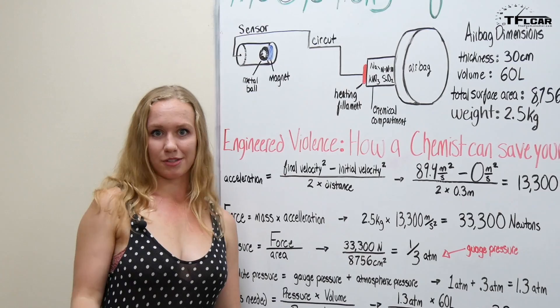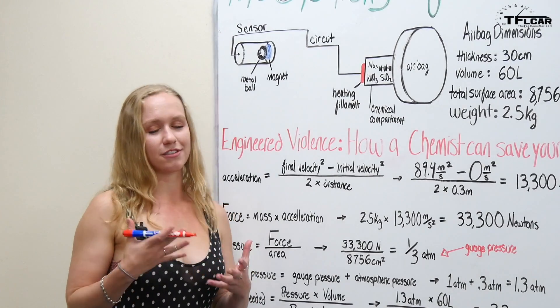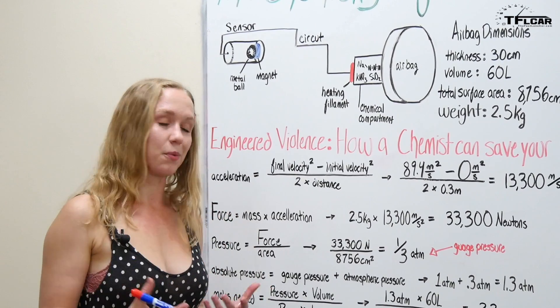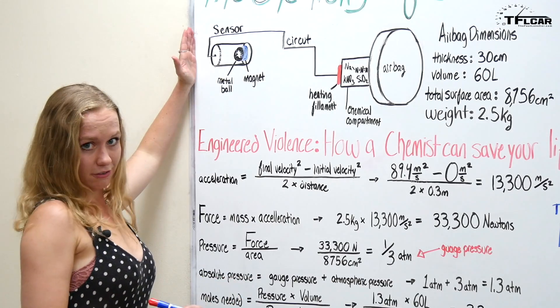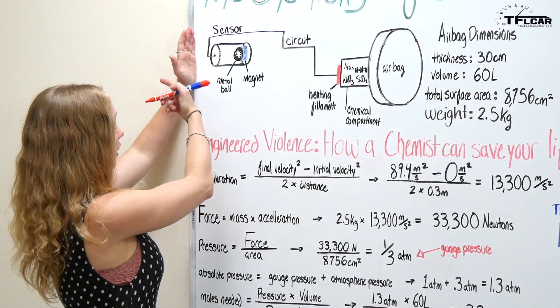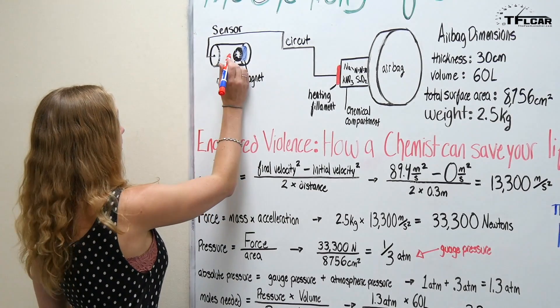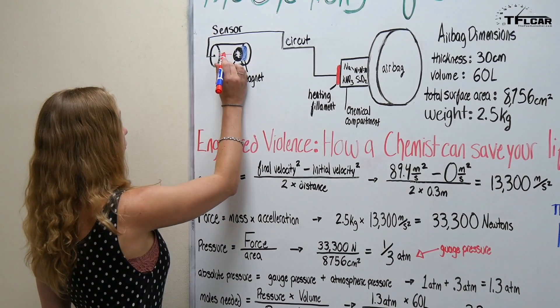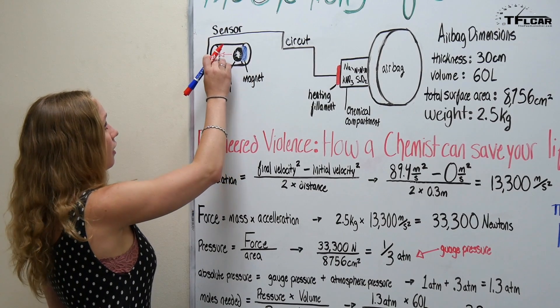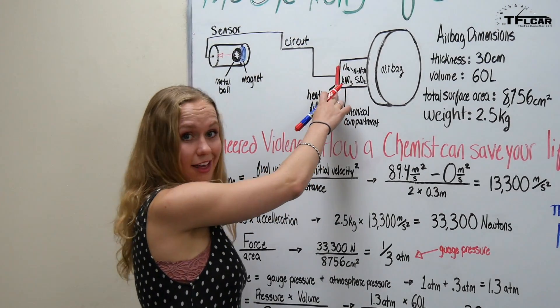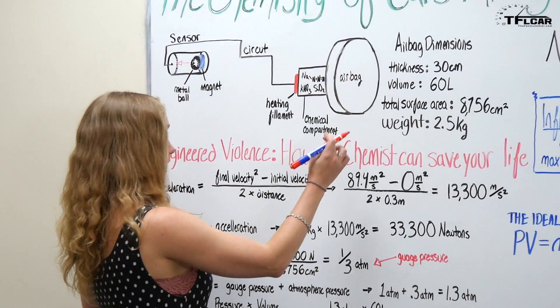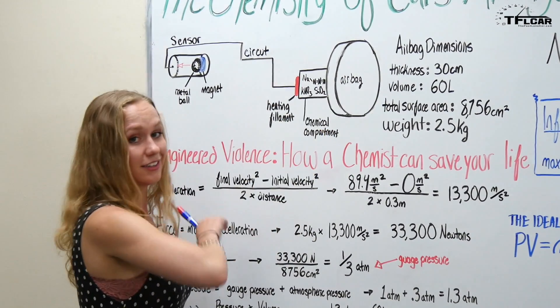So the simplest way to explain a sensor, now there's all kinds of different types but the most simple one is basically a magnet holding a metal ball. If this is the front of your car and you're moving forward however you stop suddenly this ball is going to go forward and trigger this circuit and when you come around it's going to heat that little wire filament up and cause that chemical reaction to happen.